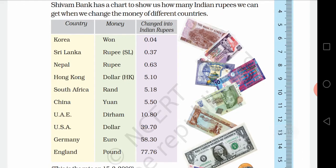There are 10 countries given to you. The currency names are: Korea — won, Sri Lanka — rupee, Nepal — rupee, Hong Kong — dollar, South Africa — rand, China — yuan, UAE — dirham, USA — dollar, Germany — euro, and England — pound.